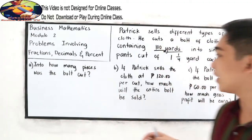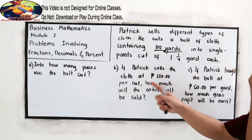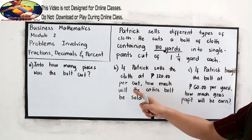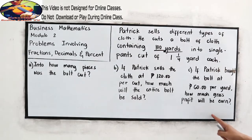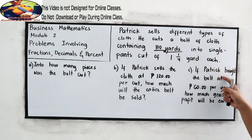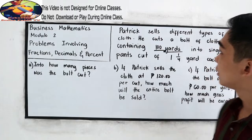Letter B, if Patrick sells the cloth at 120 pesos per cut, how much will the entire bolt be sold? Letter C, if Patrick bought the bolt at 60 pesos per yard, how much gross profit will he earn? Let us answer letter A.